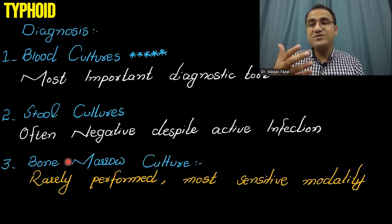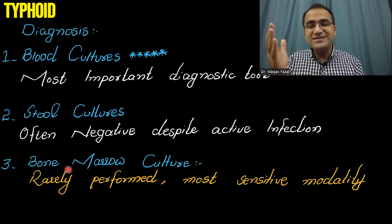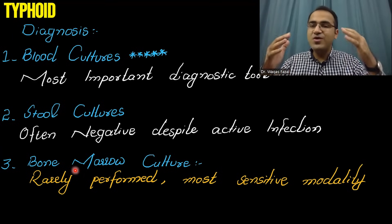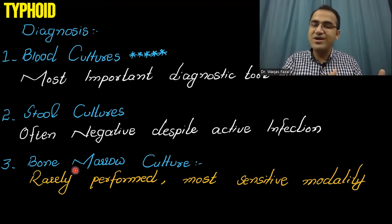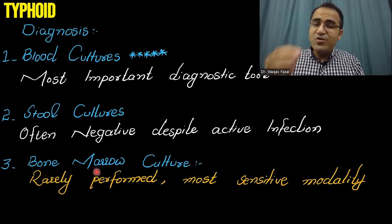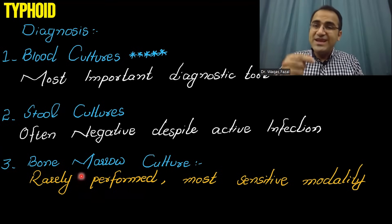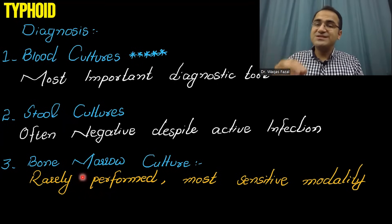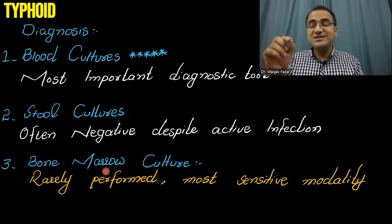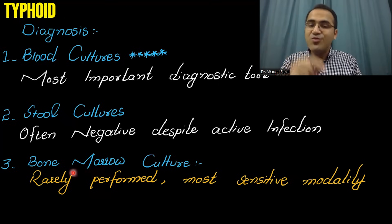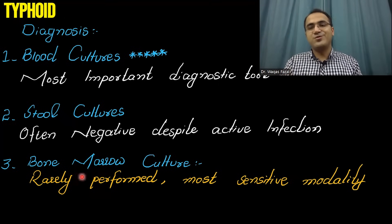For academic purposes, remember that Salmonella spreads in the body and resides in the bone marrow, liver, spleen, and gallbladder. Therefore, a bone marrow culture is the most sensitive modality. However, since it is a very invasive procedure, remember it for academic purposes — notably, even if you start antibiotics, the bone marrow culture will still turn out to be positive.